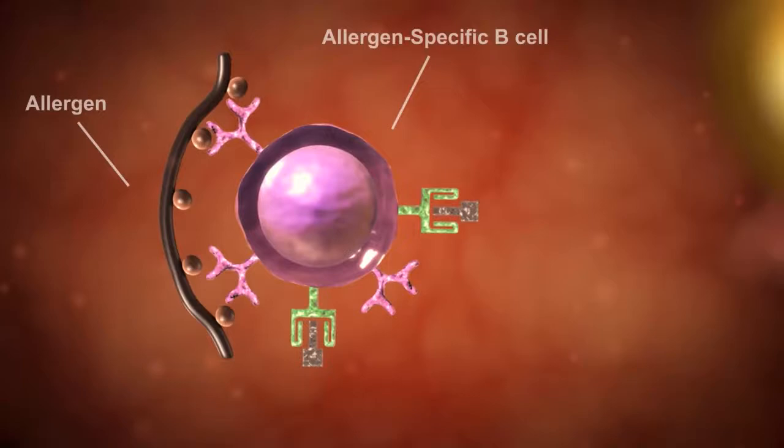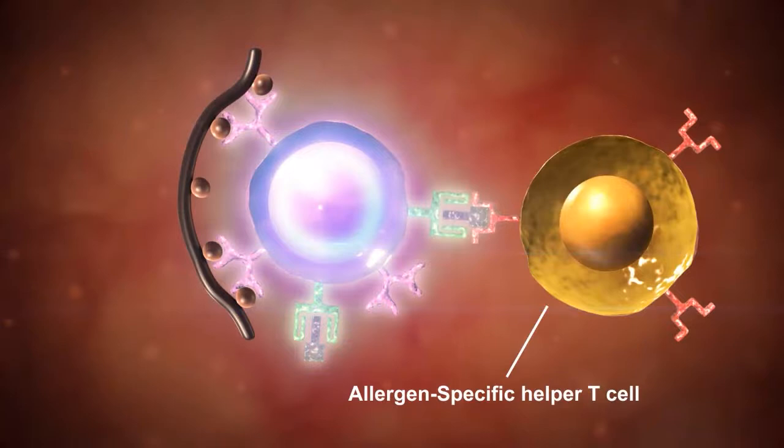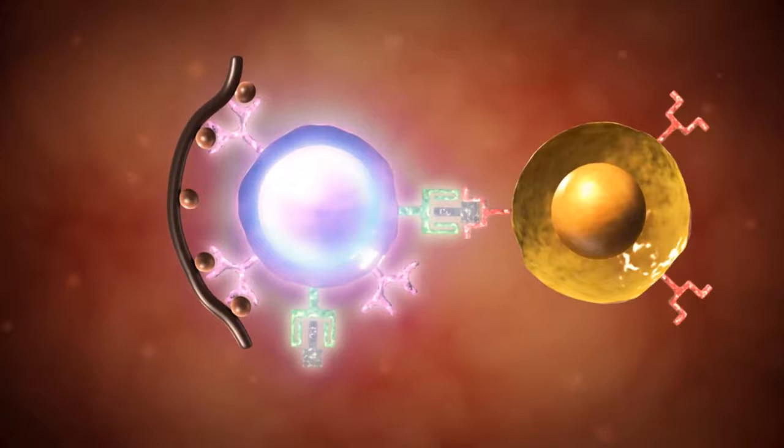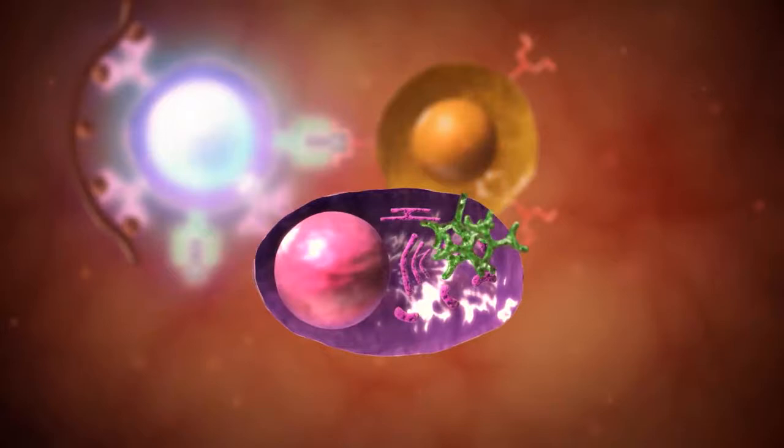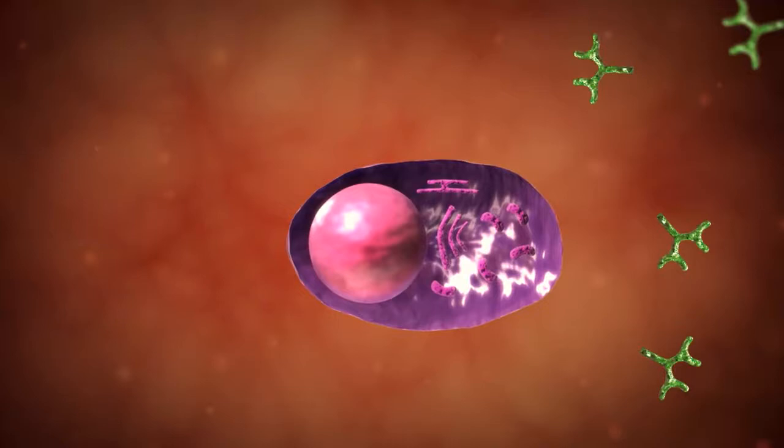Immediate hypersensitivity reactions are initiated by the introduction of an allergen. This exposure stimulates Th2 reactions and IgE class switching in B cells. The result is an IgE-secreting plasma cell and the production of immunoglobulin E, or IgE.